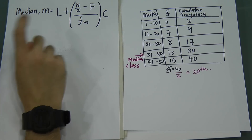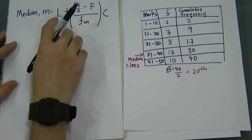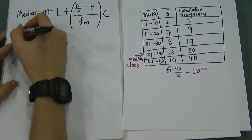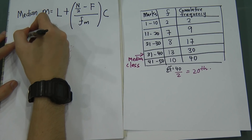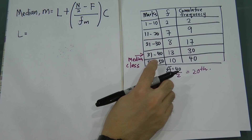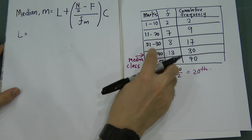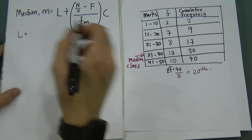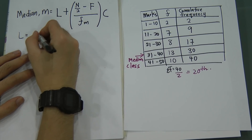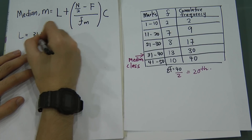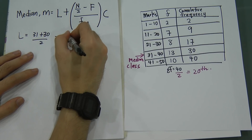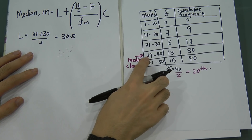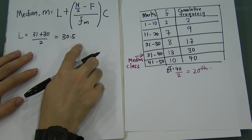The L — what is the meaning of L here? L is the lower boundary of the median class. How do we get the lower boundary? Very simple: you use the lower limit of the median class plus the upper limit of the previous class, divided by 2. So 31 plus 30 divided by 2 gives 30.5. So L = 30.5, the lower boundary of the median class.